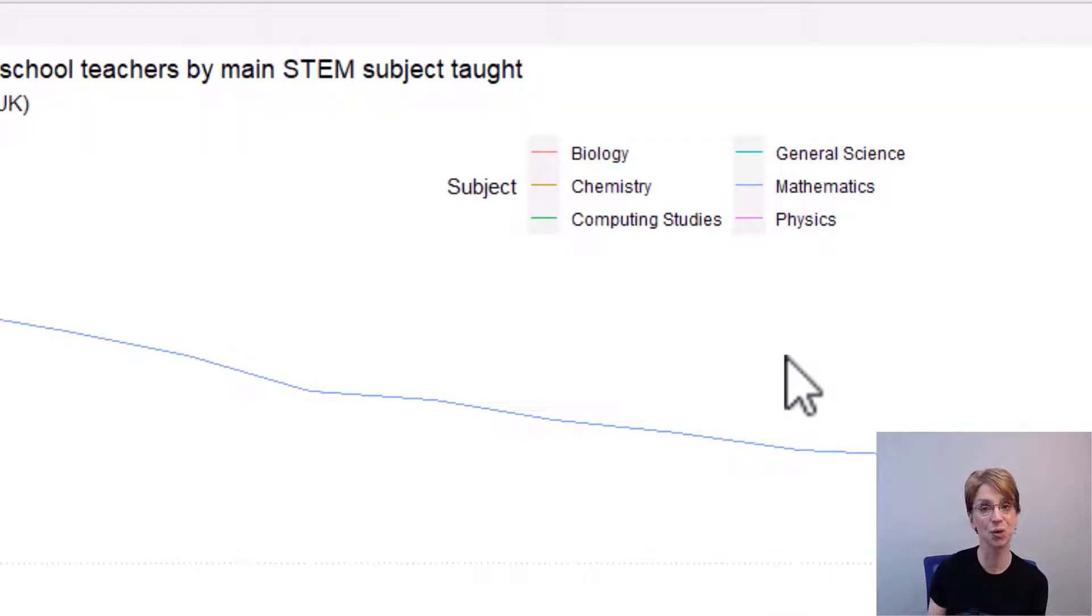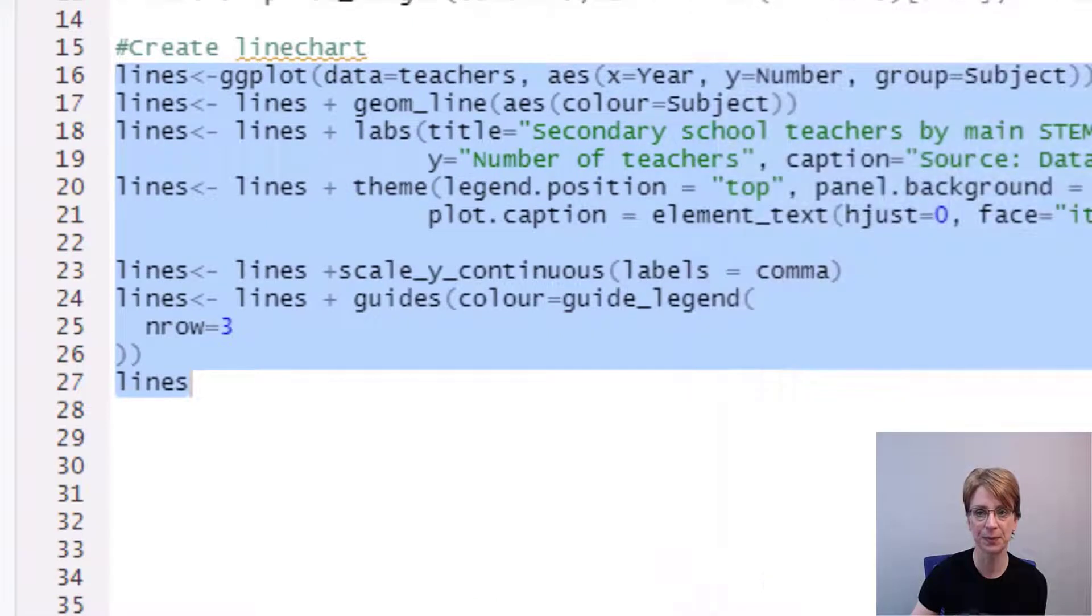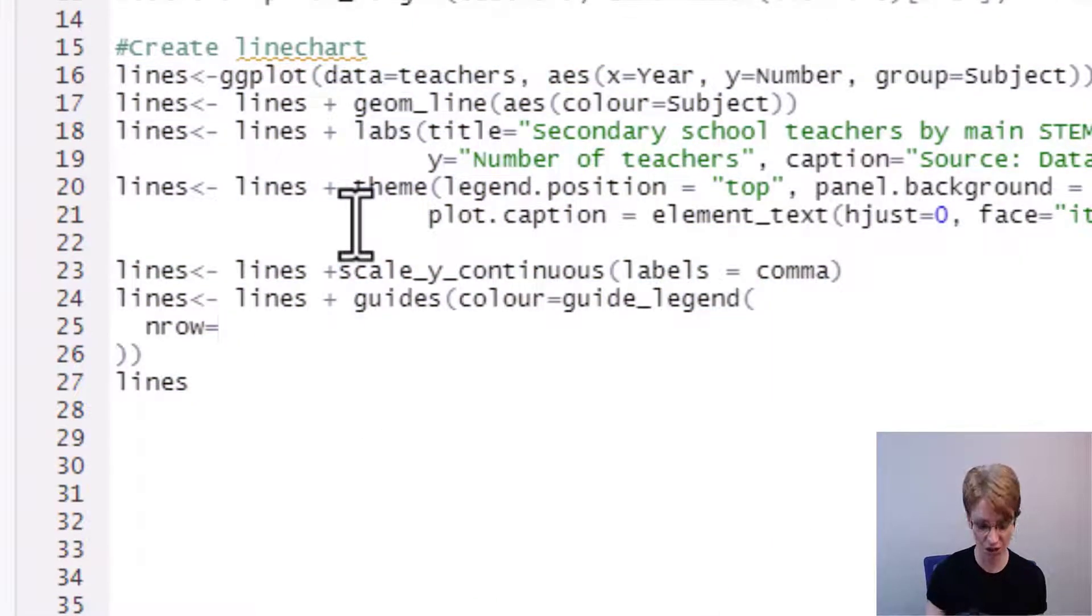If I want to make sure it is always in 2 rows I change nrow to 2 and that's what I will do in this scenario. So back in my code I change 3 to 2.